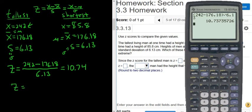For the shortest, it would be x, so 85.8, minus the mean, so 176.18, divided by the standard deviation, 6.13.